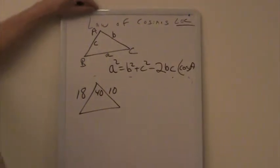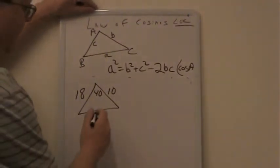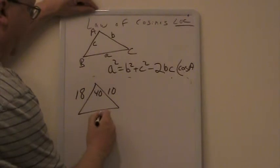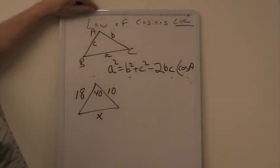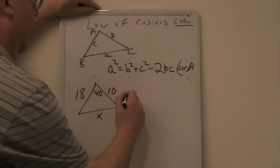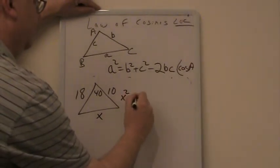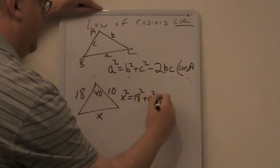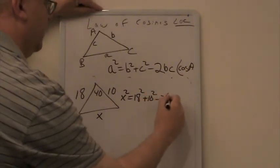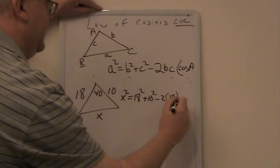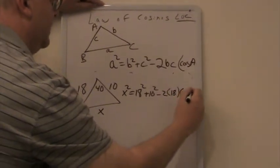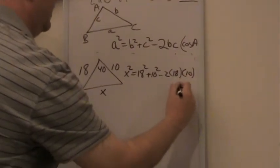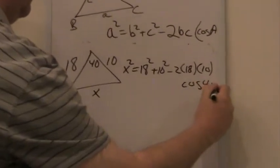Obviously not drawn to scale. Now I want to find x, the side-angle-side, I want to find x, the side opposite the angle that's given. What I would say then is this: x² is equal to 18² plus 10² minus 2(18)(10) and then times the cosine of 40.